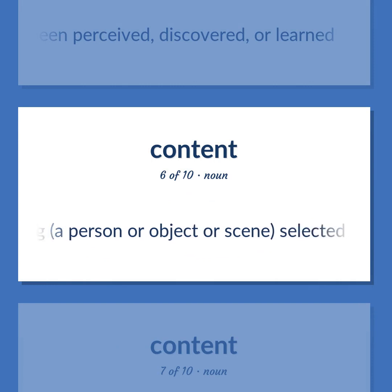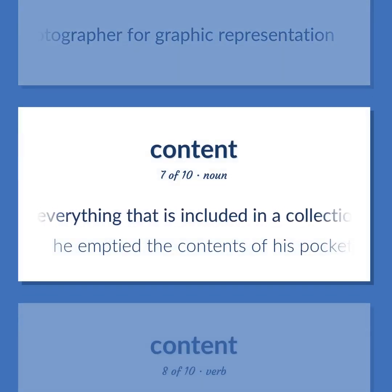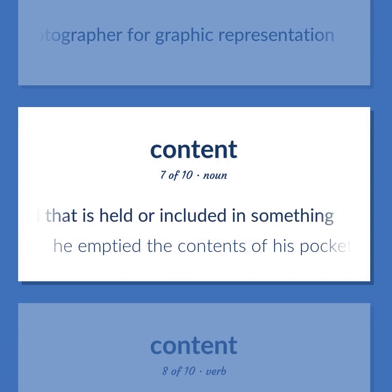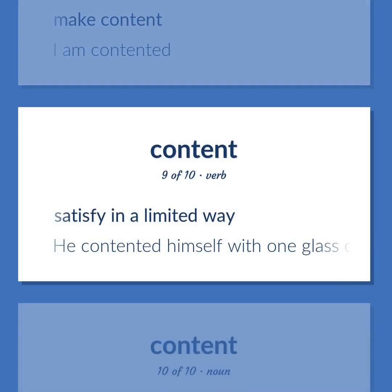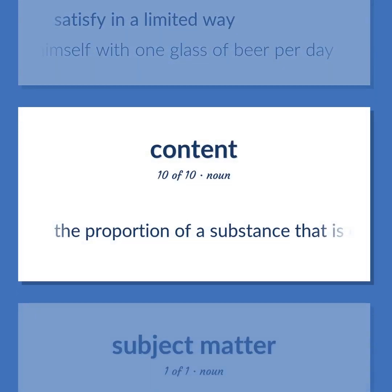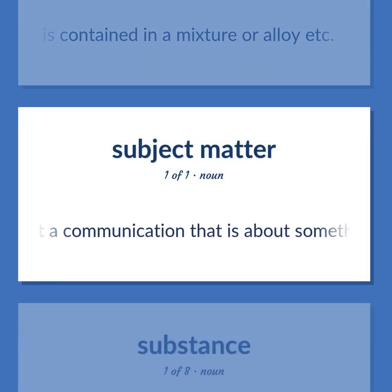'Content': Something — a person, object, or scene — selected by an artist or photographer for graphic representation. Usually plural: everything included in a collection or held in something — 'He emptied the contents of his pockets.' To make content — 'I am contented.' To satisfy in a limited way — 'He contented himself with one glass of beer per day.' The proportion of a substance contained in a mixture or alloy. What a communication that is about something is about.